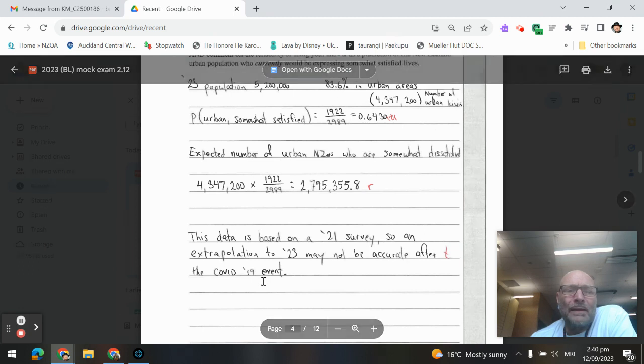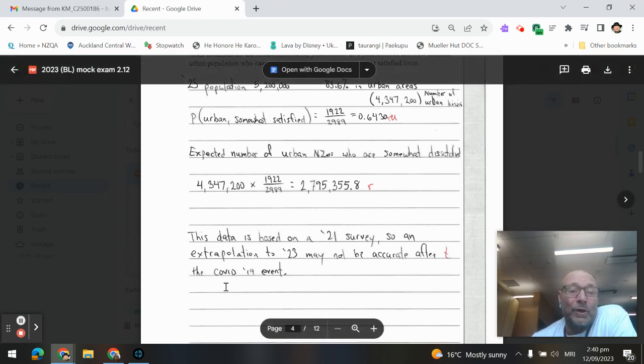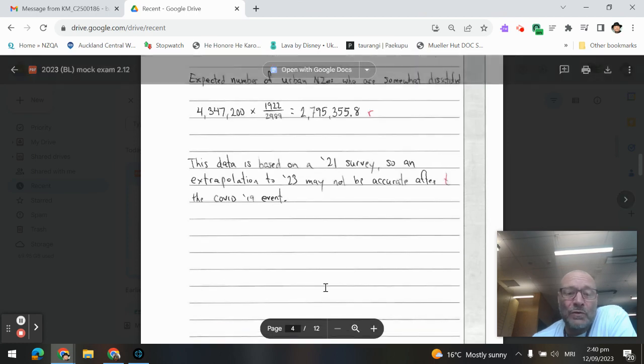There is your merit mark, and the extension there: can it be accurate? Now, they said in the Patai, it said that this data is based on a 2021 survey. So extending that or extrapolating that to 2023 might not be accurate after the COVID-19 event. Okay, so there's question one.